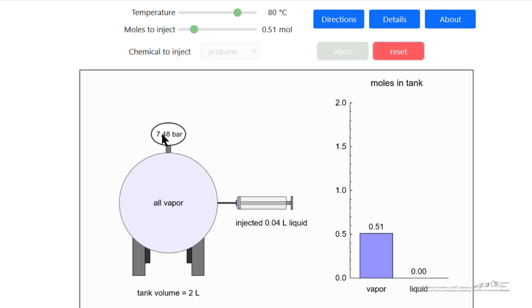The pressure is lower than saturation pressure. Now, if I increase the number of moles that we injected, we're at a temperature such that we don't have any liquid present. But if I lower the temperature, now we're at saturation.